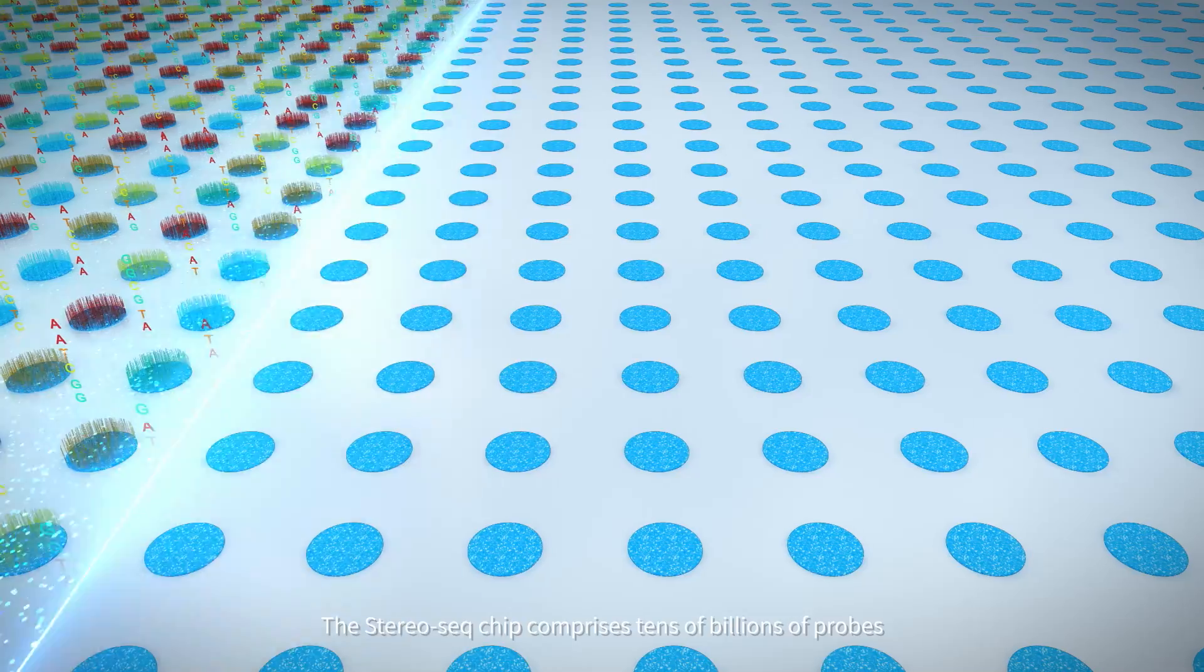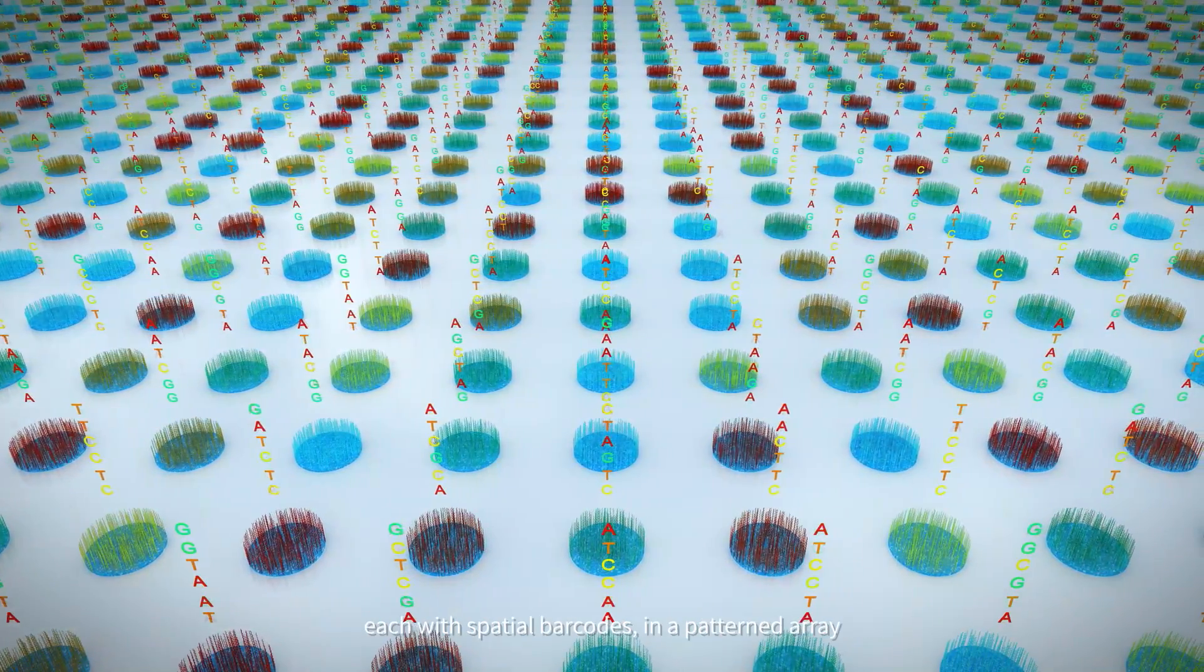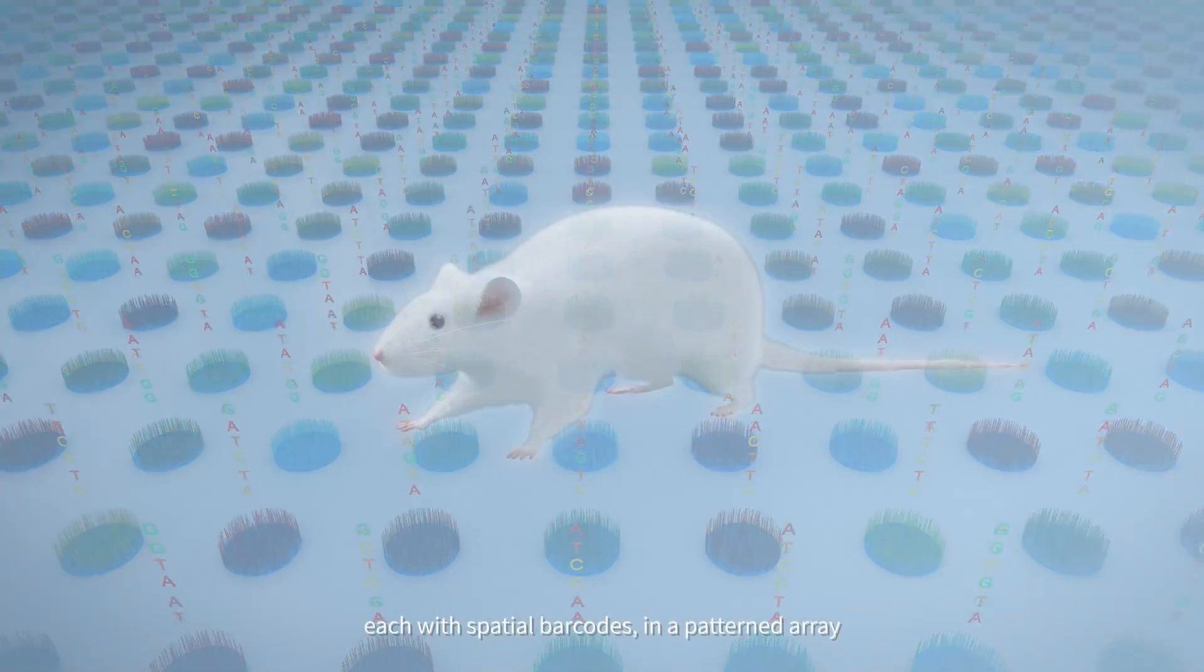The Stereo-seq chip comprises tens of billions of probes, each with spatial barcodes, in a patent array.